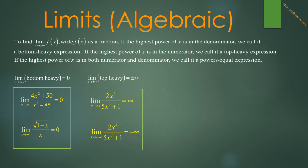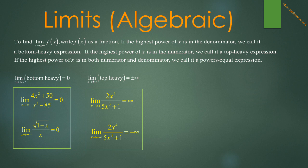The limit as x approaches plus or minus infinity of top-heavy expressions is plus or minus infinity. To determine which, plug in a very large or very small number to check the sign. The limit as x approaches infinity of 2x to the fourth over 5x to the third plus 1: with a very large positive x, both numerator and denominator are positive, so the answer is positive infinity. The limit as x approaches negative infinity of the same expression: with x equal to negative 1,000,000 the numerator is positive but the denominator is negative, making the answer negative infinity.